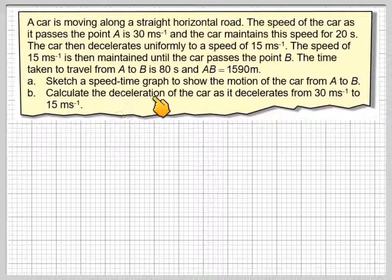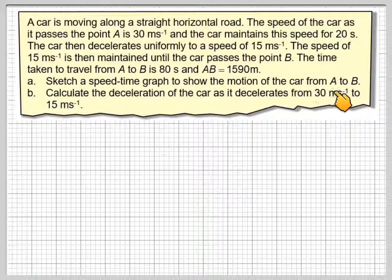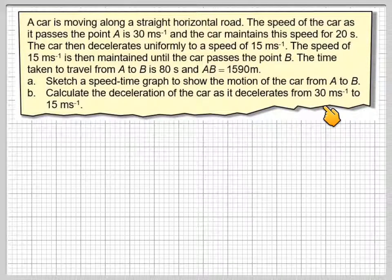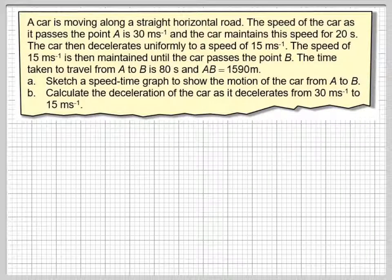The time taken to travel from A to B is 80 seconds and the distance AB is 1590 metres. Sketch a speed time graph to show the motion of the car from A to B. Calculate the deceleration of the car as it decelerates from 30 metres per second to 15 metres per second.